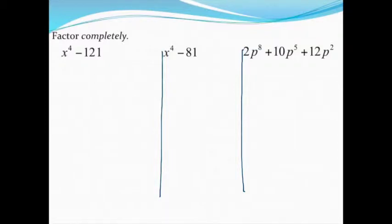The problem has two terms, so there's really only two things I can try: difference of two squares or sum or difference of two cubes. If I try to do the cube root of x to the fourth or 121, it's not going to work out very well. But if I do the square root, I will be able to get answers that are not decimals. So let's actually do this as the difference of two squares.